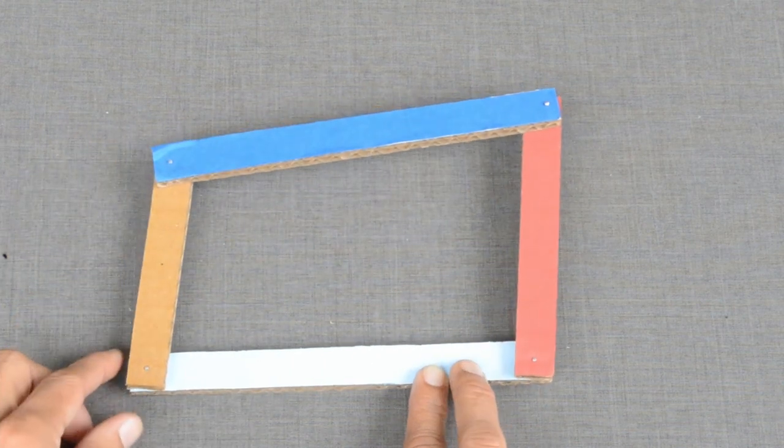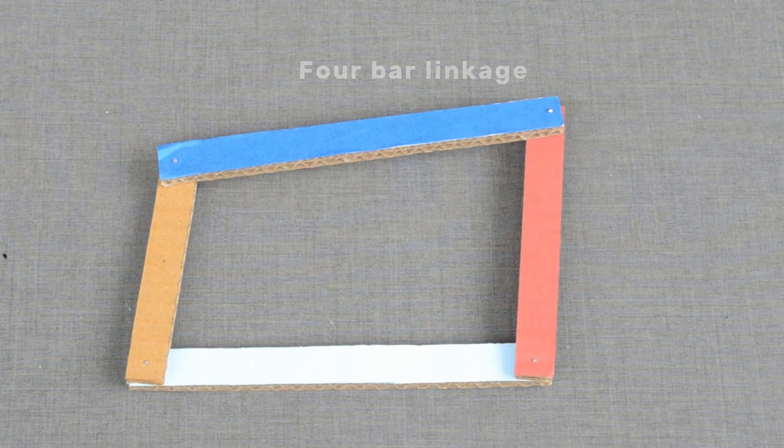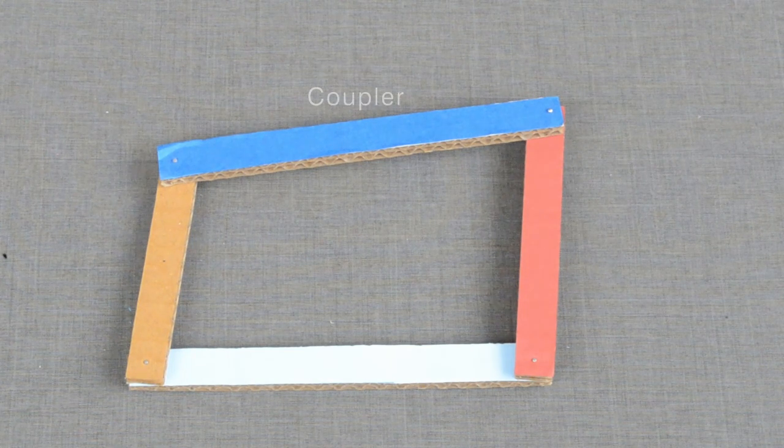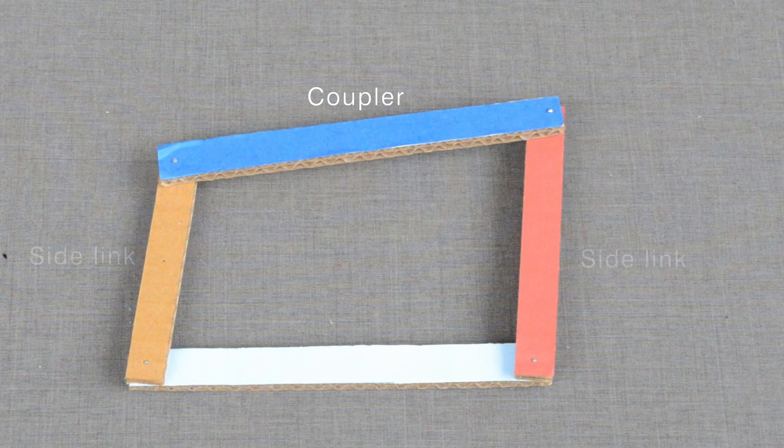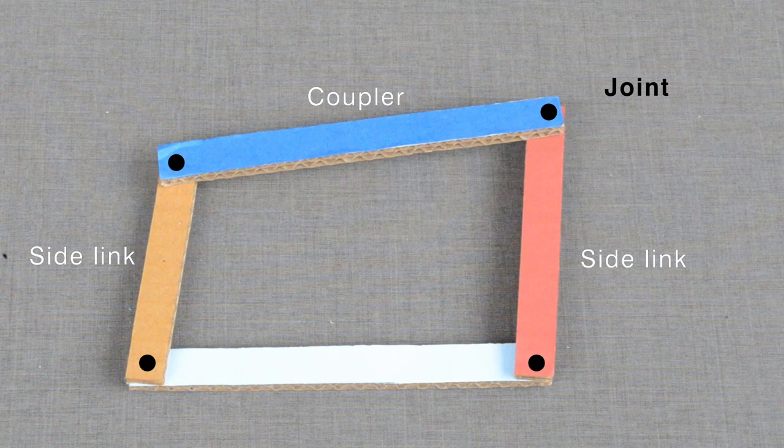This arrangement is called 4 bar linkage. Blue strip is called a coupler while light blue strip represents a frame. Brown and red strips are side links. These points are called joints.